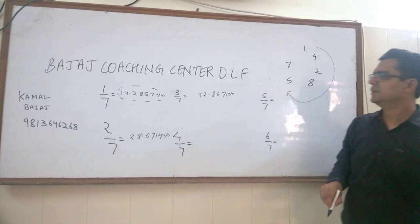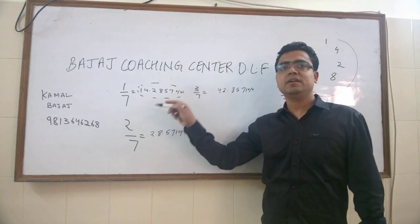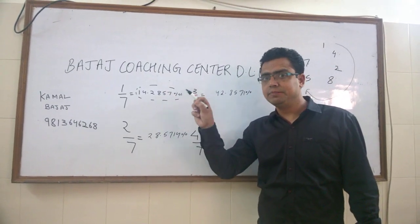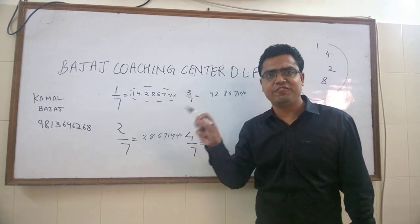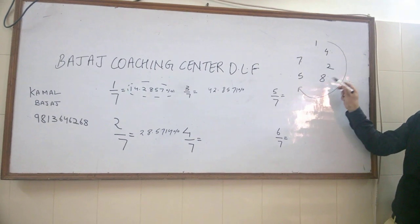What about four by seven? If one by seven is 14 point something, four by seven is 14 times four, which is 56. It means our value should start with five. Where is five? Here it is: 57.1428.